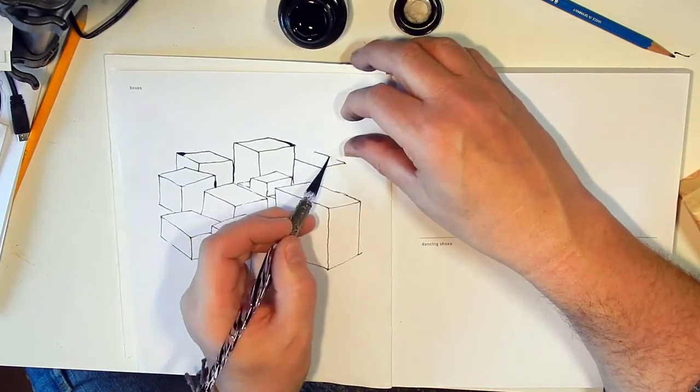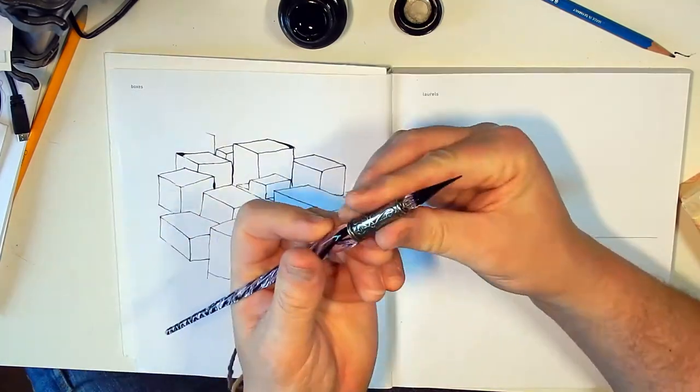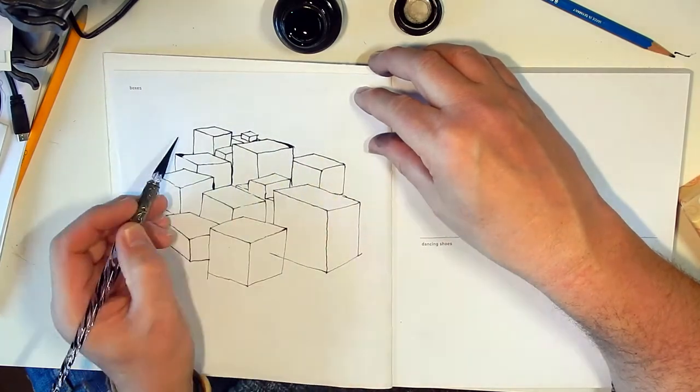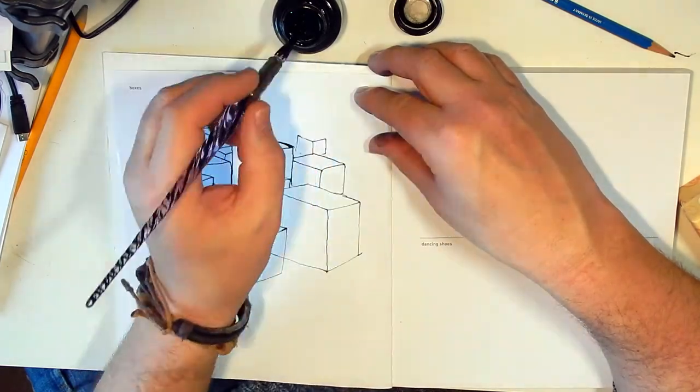So I put it away and I used some Winsor and Newton black ink which seemed a lot more dense than this Bortoletti ink.